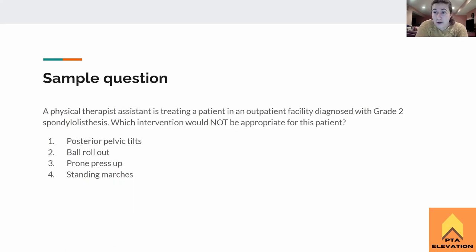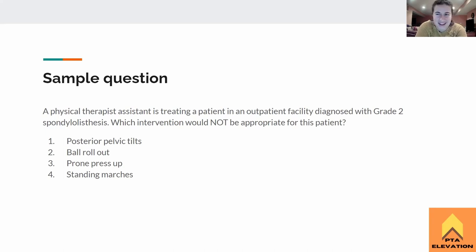Sample question: A physical therapist assistant is treating a patient in an outpatient facility diagnosed with grade 2 spondylolisthesis. Which intervention would NOT be appropriate for this patient? One — posterior pelvic tilts. Two — ball rollout. Three — prone press-up. Four — standing marches.